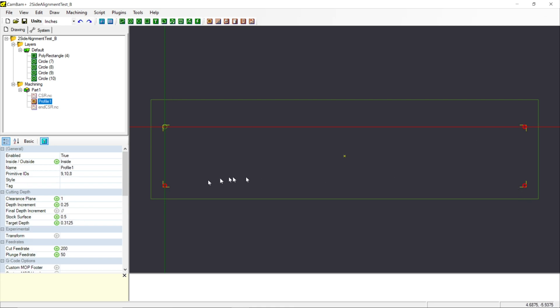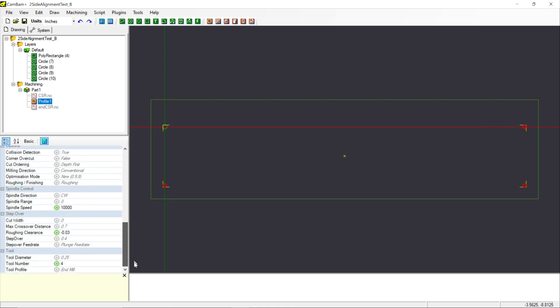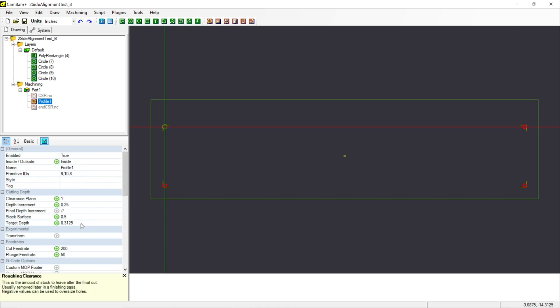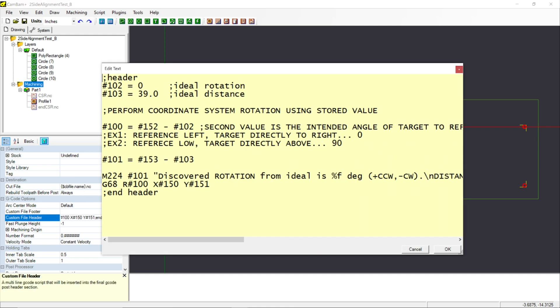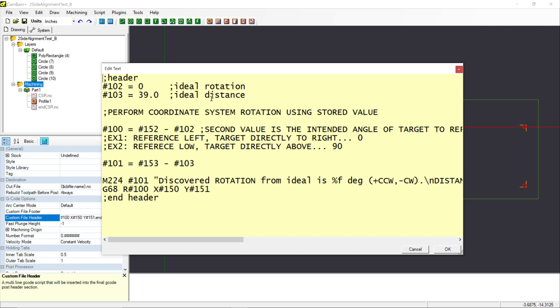I am going to machine slightly larger diameter holes in three of the hole locations. These holes will only be machined part way through the board so we can compare the alignment with the previous operation. Then I created a G-code header that imports a measured rotation and tells the machine to perform a coordinate system rotation throughout the machining operation.